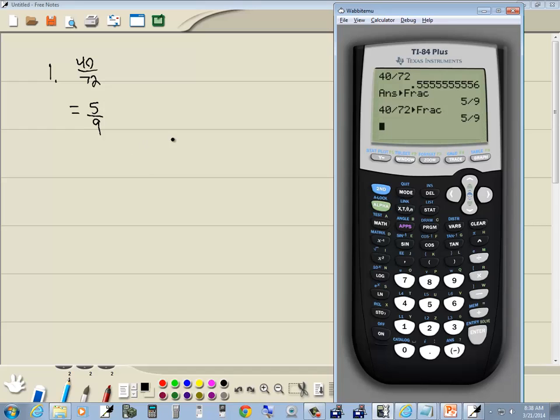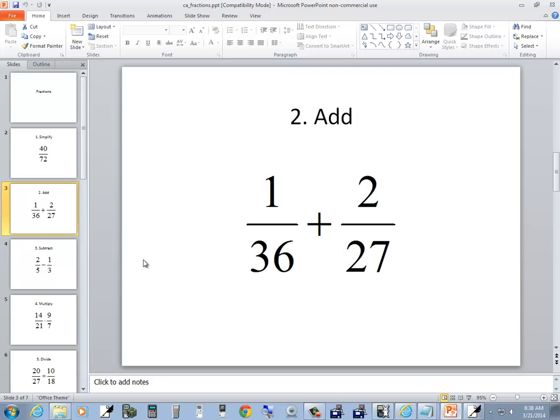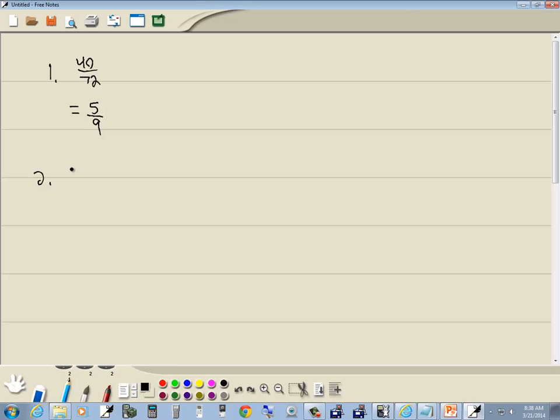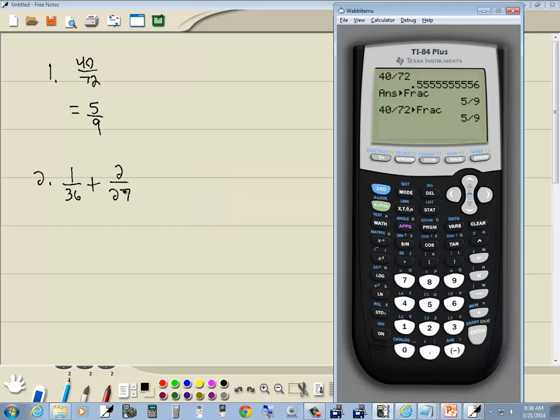Our second one, we want to add these two fractions together. So we got 1 over 36 plus 2 over 27. Now I'll press clear to clear that screen. Type it as we see it. So we do 1 divided by 36 plus 2 divided by 27, enter, and we get a decimal. Then we'll do math, enter, enter, and that gives us 11 over 108.